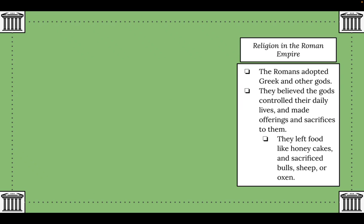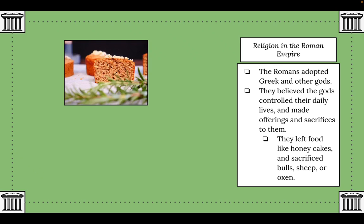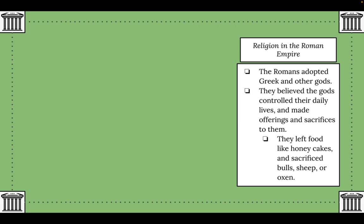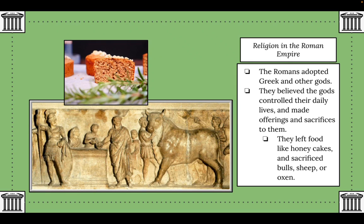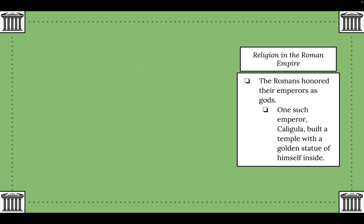Next we have religion in the Roman Empire. The Romans adopted a number of Greek gods but also other gods, assembling their own group of gods. They believed their gods controlled their daily lives, so they made offerings and sacrifices to please them — leaving food like honey cakes and sacrificing animals like bulls, sheep, and oxen.